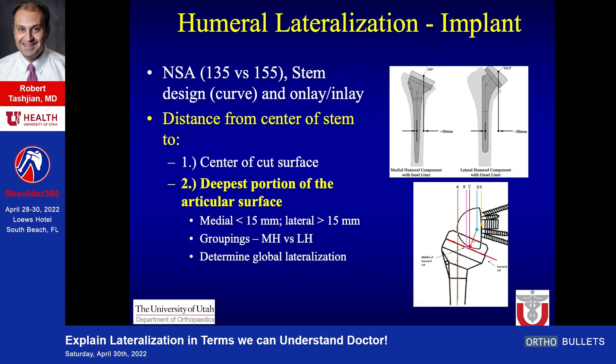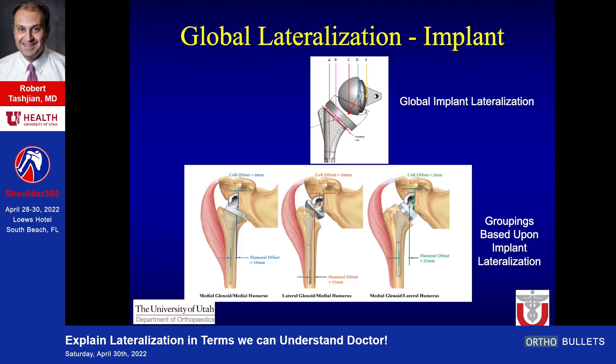Looking at humeral implant lateralization: Howard Routman described this and broke components down into either medialized or lateralized humeral designs. A 135-degree neck shaft angle, a curved stem, or an onlay implant can increase humeral lateralization. There are two ways to measure this: from the center of the stem to the center of the cut surface, or to the deepest portion of the articular surface. I prefer the latter, as you can classify designs as medialized or lateralized based on 15 millimeters and determine global lateralization.